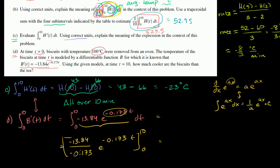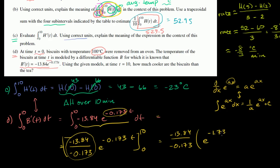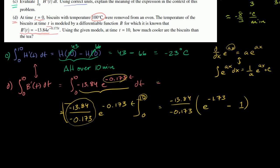Factoring out the constant, this is negative 13.84 over negative 0.173, times the quantity e to the negative 1.73 minus e to the 0. When t equals 0, the exponent is 0, so e to the 0 is just 1. Now we can get the calculator out to evaluate this.